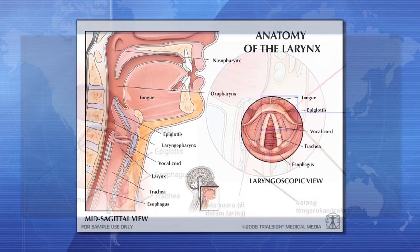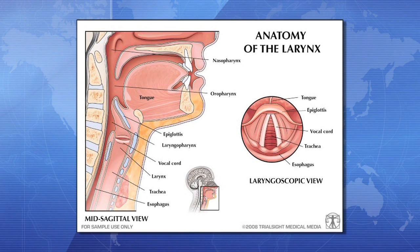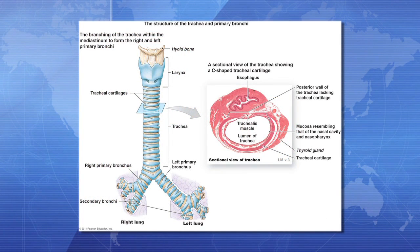Ketiga, epiglottis atau anak tekak adalah berupa katup, merupakan persimpangan antara kerongkongan dan tenggorokan yang berfungsi menutup lubang yang menuju laring waktu menelan dan kembali ke posisi semula setelah penelanan selesai. Keempat adalah laring yang terdiri atas kepingan tulang rawan yang membentuk jakun dan terdapat celah menuju batang tenggorok, disebut glottis, di dalamnya terdapat pita suara. Kelima adalah trachea yang terdiri dari 16 sampai 20 buah cincin tulang rawan yang membentuk pipa udara dari ujung laring sampai bagian atas paru-paru.